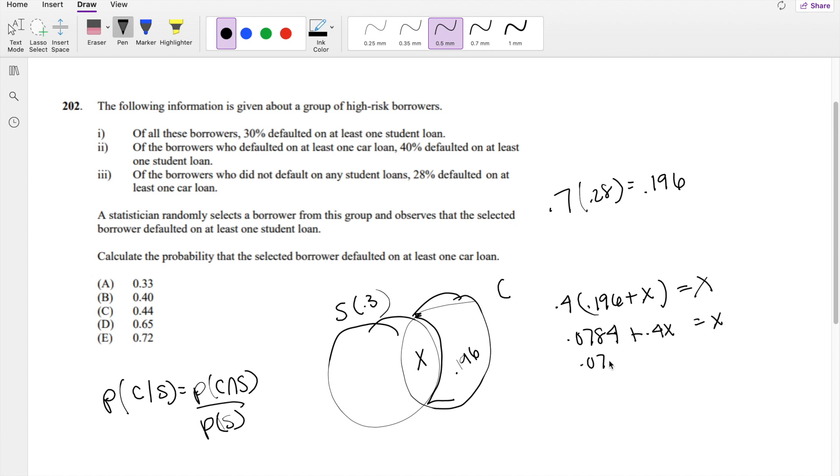So solving for X, we get 0.0784 is equal to 0.6X. So X is equal to 0.13066 repeating.